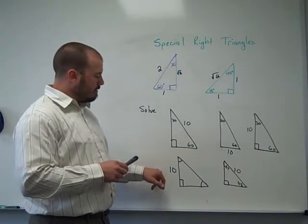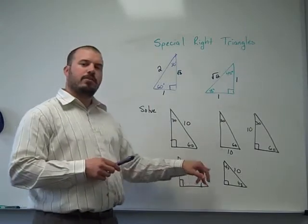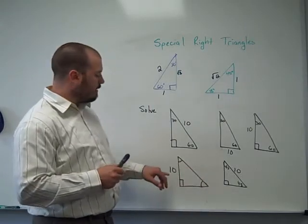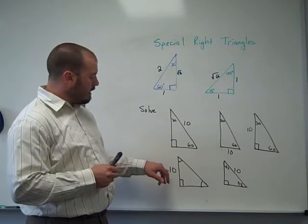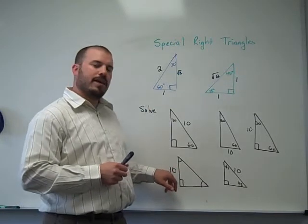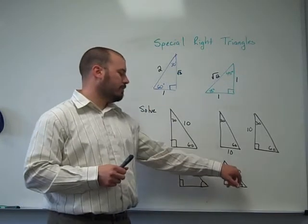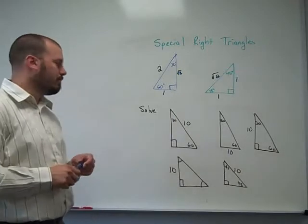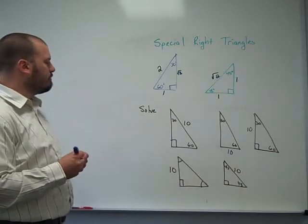At the bottom, I've got some isosceles right triangles, or 45-45-90 triangles, where in this one the legs are 10, and in this one the hypotenuse is 10. So we'll see different results there as well.